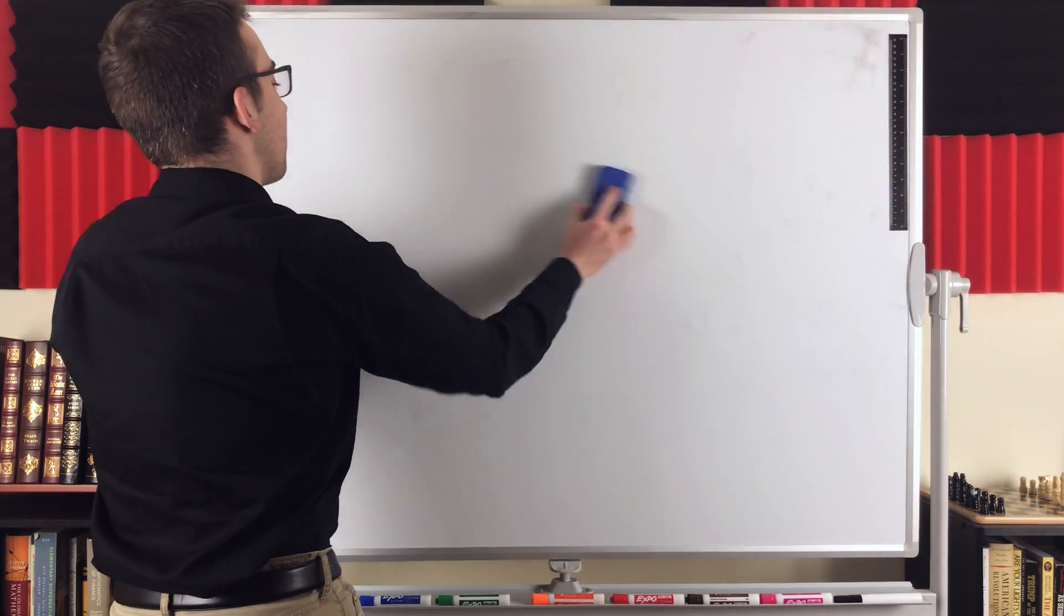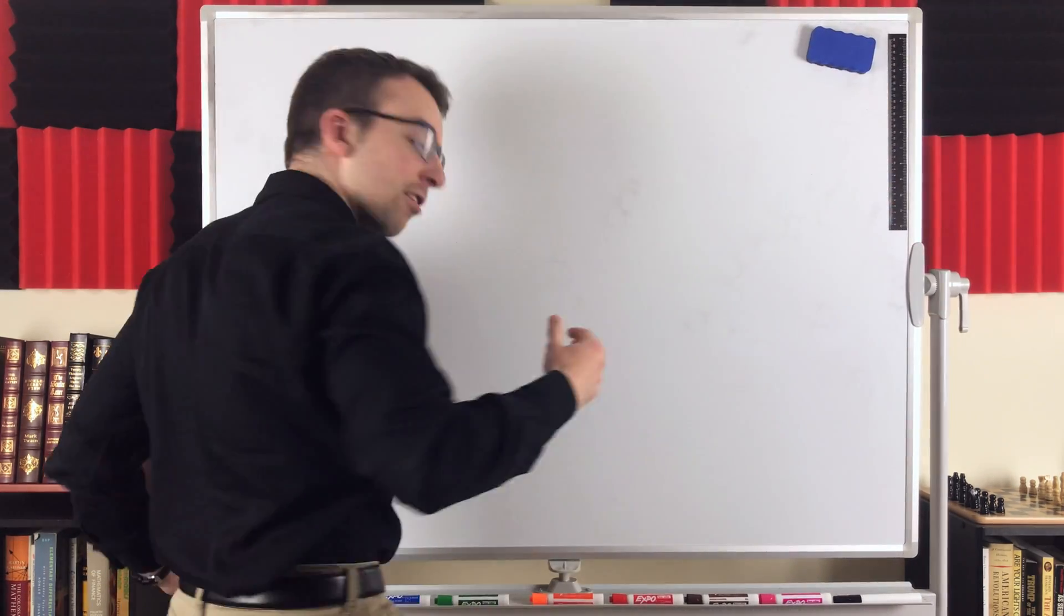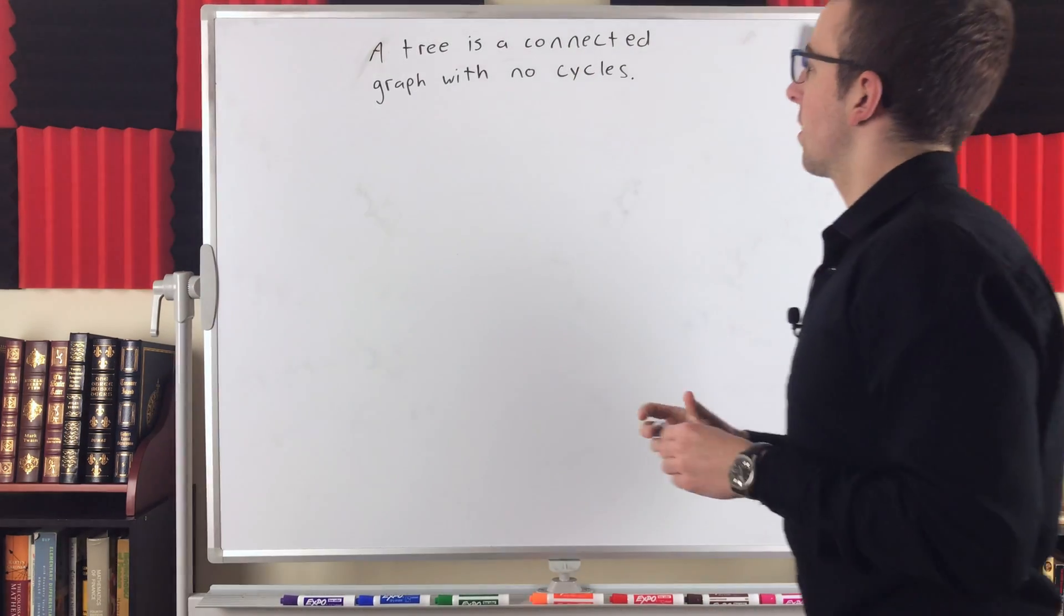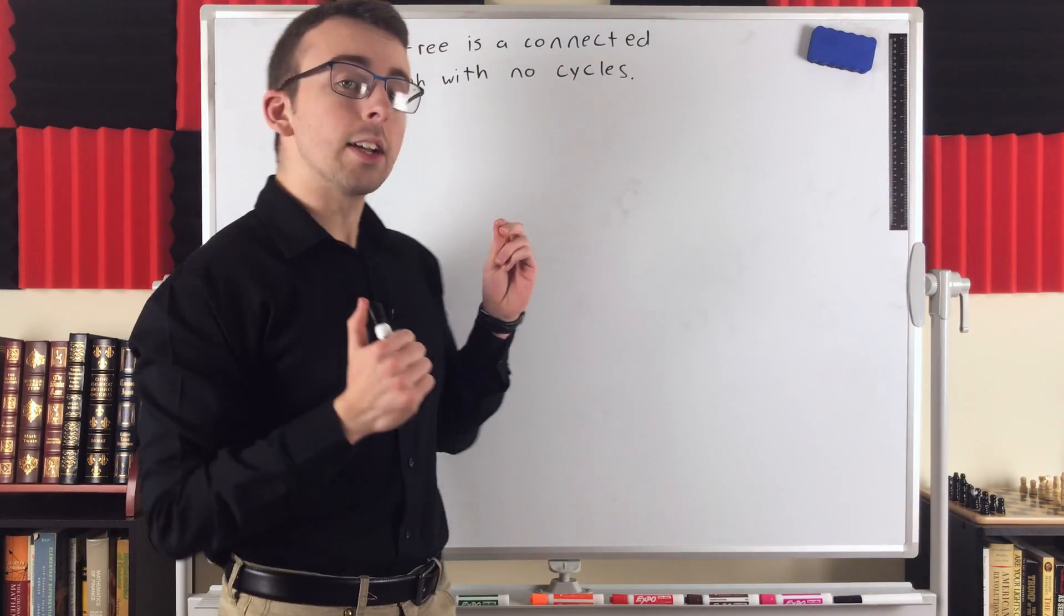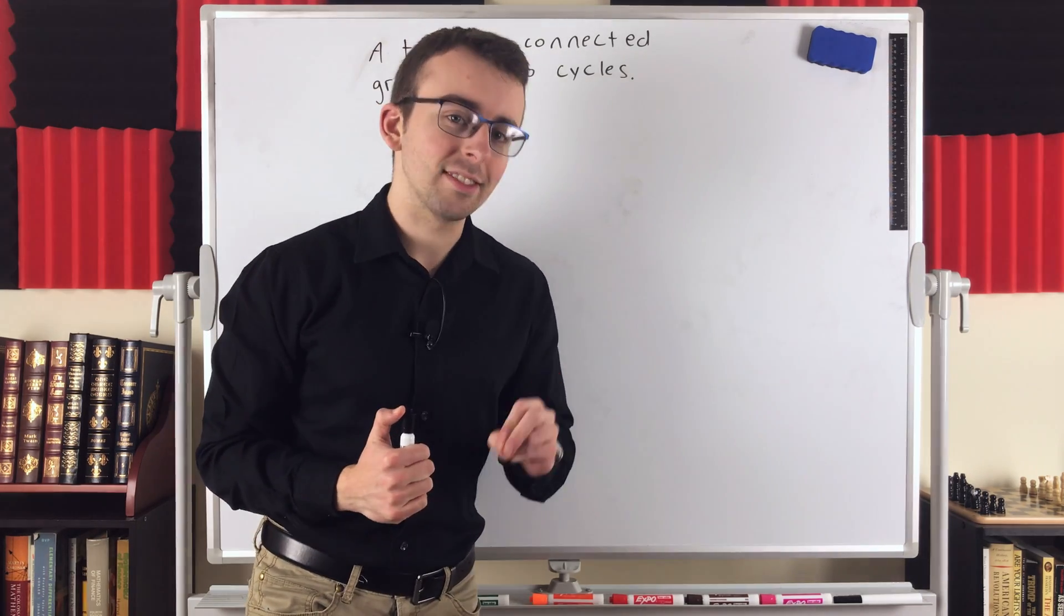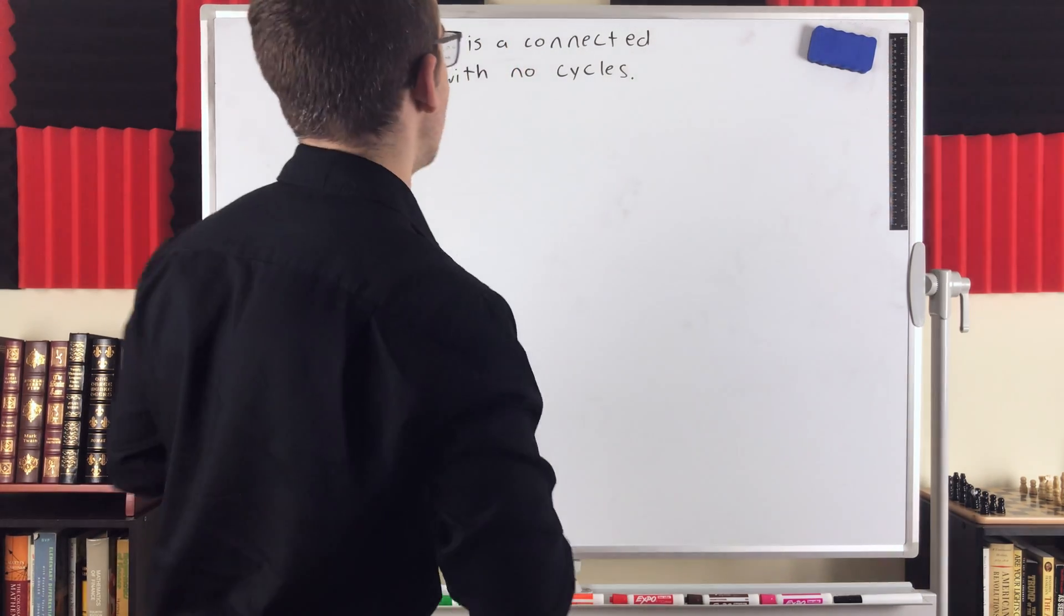A tree, in graph theory, is a connected graph with no cycles. So that's our definition. A tree is a connected graph with no cycles. There are some other equivalent definitions that are pretty cool. We'll talk about them a little bit in this lesson. We'll prove them in a different lesson.